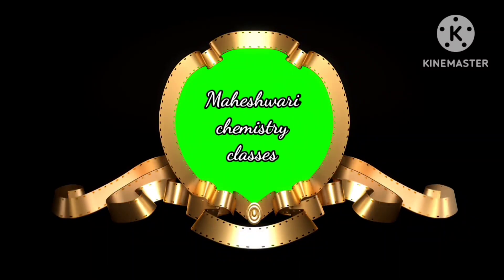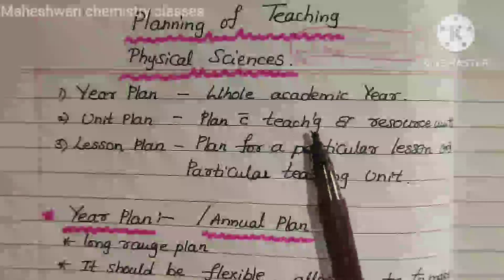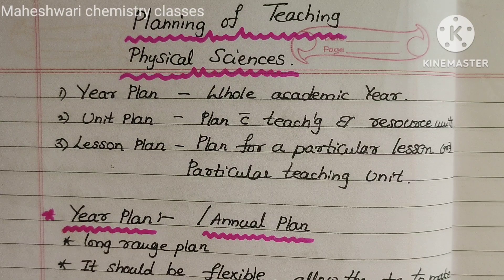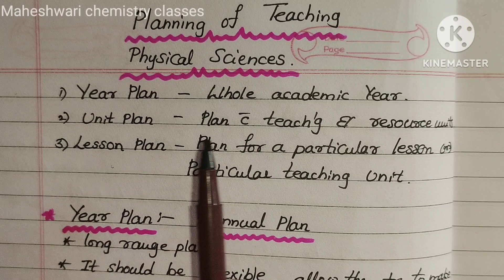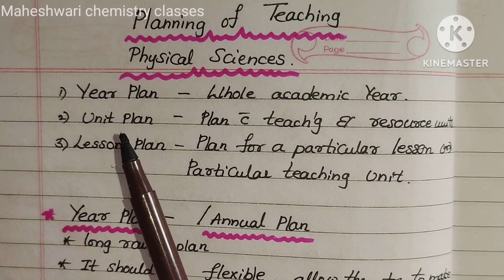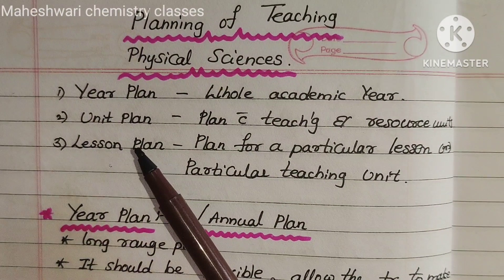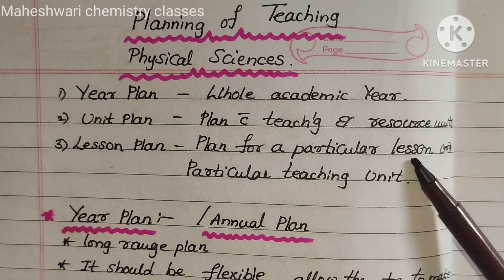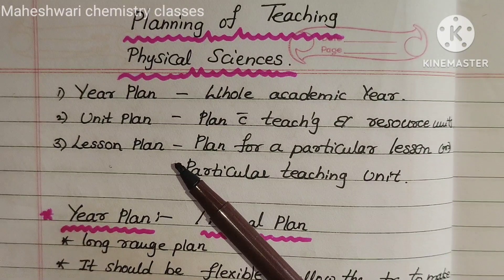Hi and welcome to Maheshwari Chemistry Classes. This is Unit 6 on Planning of Teaching Physical Sciences. There are three types of planning: first is Year Planner, second is Unit Planner, and third is Lesson Planner. The Year Plan covers the whole academic year, the Unit Plan covers a teaching and resource unit, and the Lesson Plan covers a particular lesson or particular teaching unit.